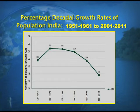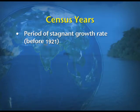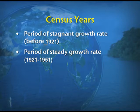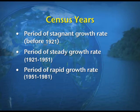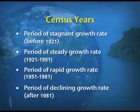According to this diagram, we divide the census years into four parts: the period of stagnant growth rate before 1921; the period of steady growth rate from 1921 to 1951; the period of rapid growth rate from 1951 to 1981; and the period of declining growth rate after 1981. We will discuss all four stages separately.